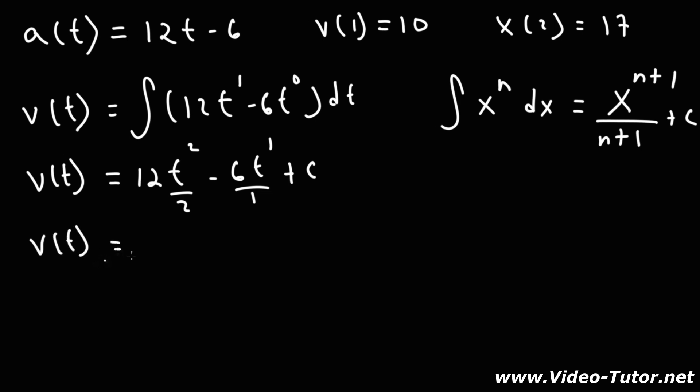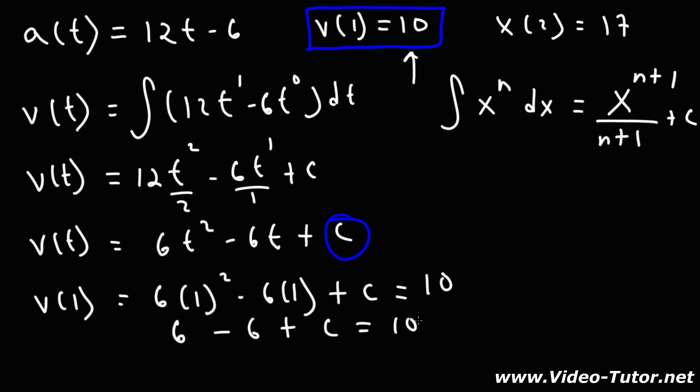So right now we have that v of t is going to be 6t squared minus 6t plus c. Now we're given a point in the velocity function, v of 1 is equal to 10. So using this point, we need to determine the constant of integration, our c value. So v of 1 is going to be 6 times 1 squared minus 6 times 1 plus c, and we know that v of 1 is 10. So this becomes 6 minus 6 plus c equals 10. Now 6 minus 6 will cancel, so we get that c is equal to 10.